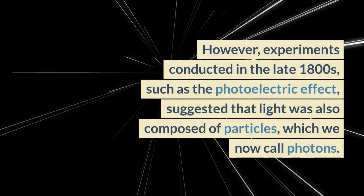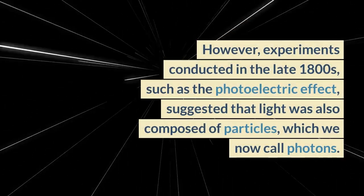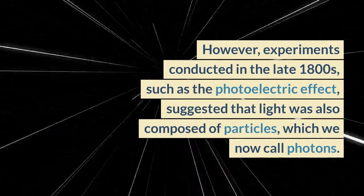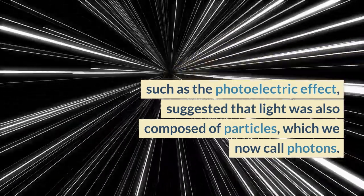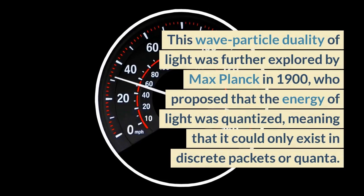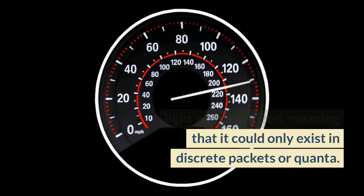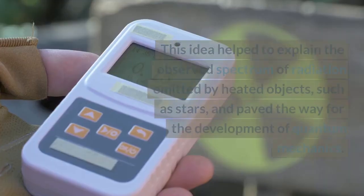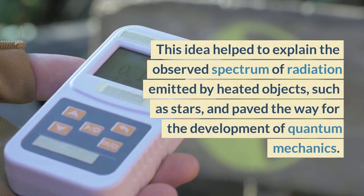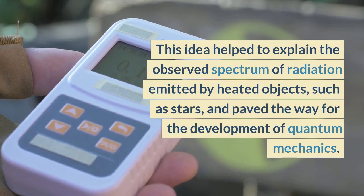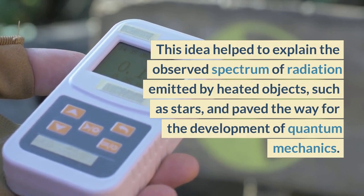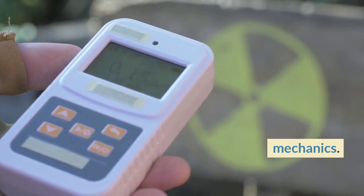However, experiments conducted in the late 1800s, such as the photoelectric effect, suggested that light was also composed of particles, which we now call photons. This wave-particle duality of light was further explored by Max Planck in 1900, who proposed that the energy of light was quantized, meaning that it could only exist in discrete packets or quanta. This idea helped to explain the observed spectrum of radiation emitted by heated objects, such as stars, and paved the way for the development of quantum mechanics.